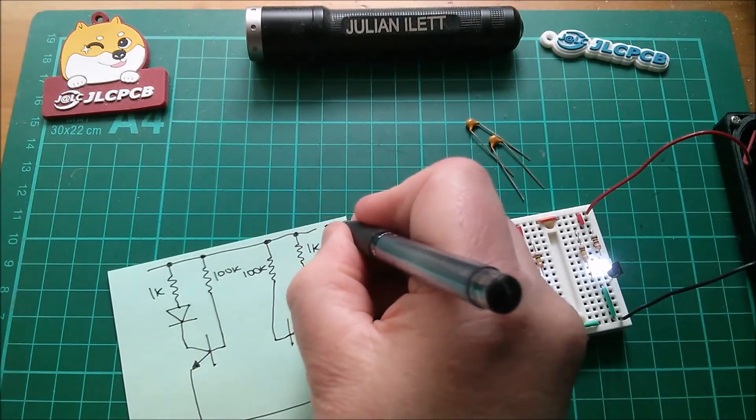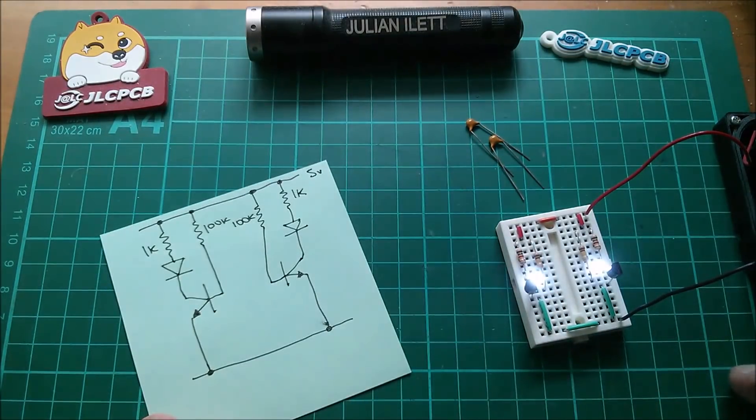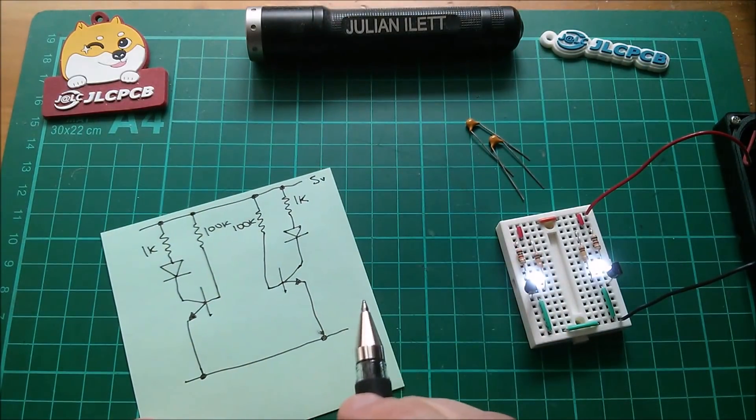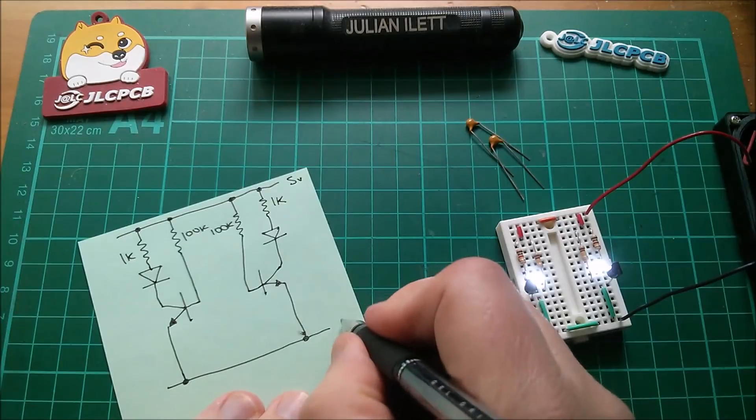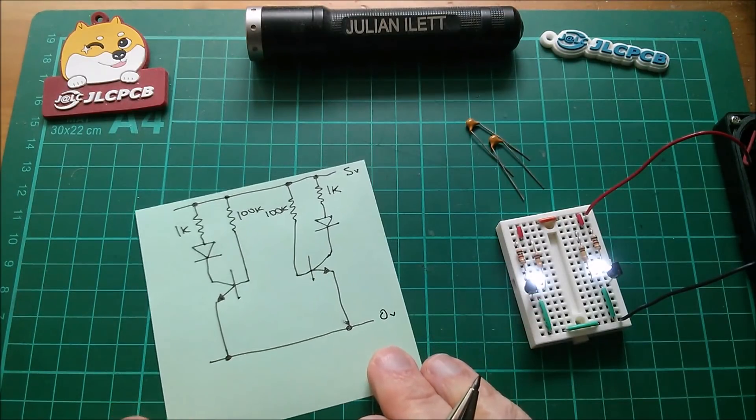This up here is 5 volts. Actually, it's 4.8 because I've got four nickel metal hydrides. And this is zero volts.